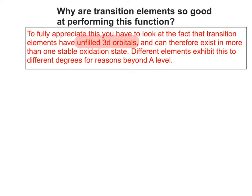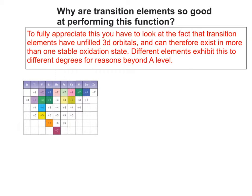Just to clarify: when I say unfilled 3D orbitals, if you look at other transition elements in the D-block, you could have ones in the 4D or 5D row as well — it's not just the top row. Potentially all of the transition elements can exhibit this, but some exhibit it to greater degrees than others. So if a transition element can exist in at least two oxidation states, it can potentially act as a catalyst. We've got six possible candidates in the top row of the D-block, in the 3D subshell, and we're going to look at some in closer detail.